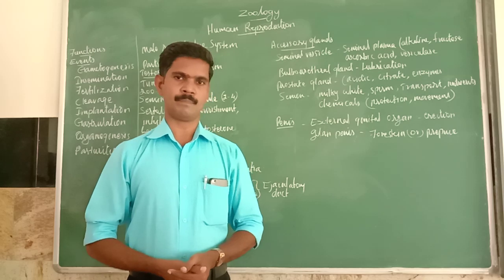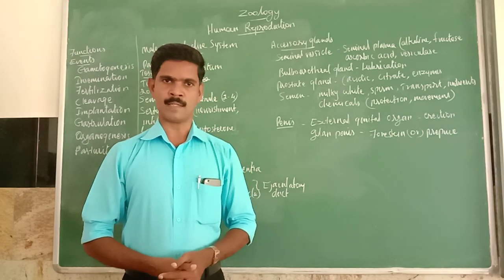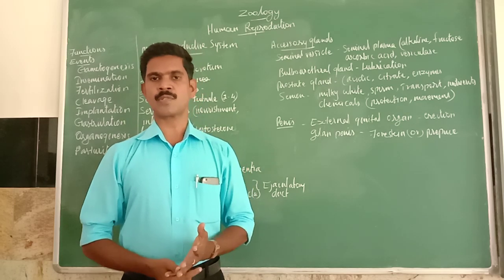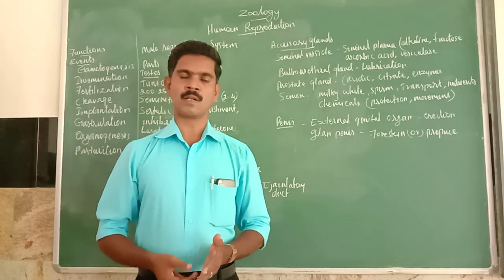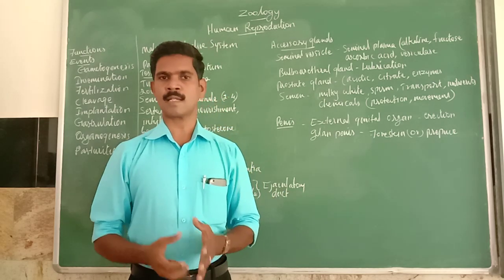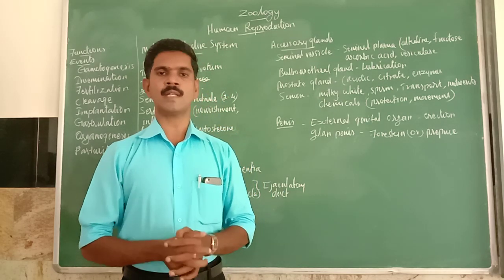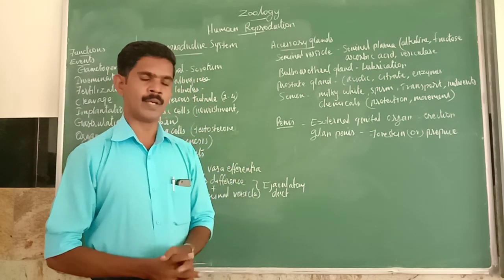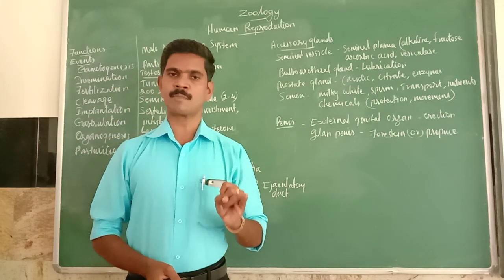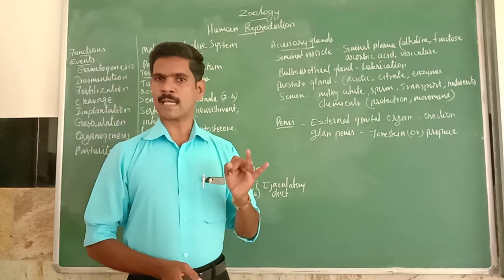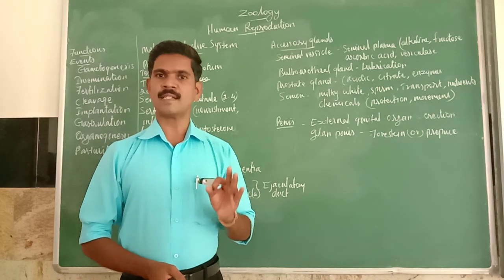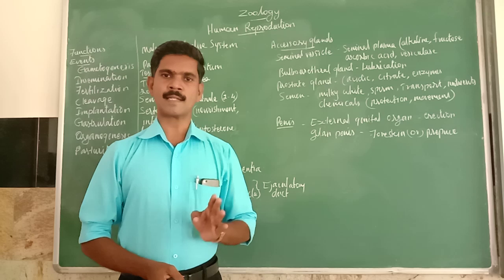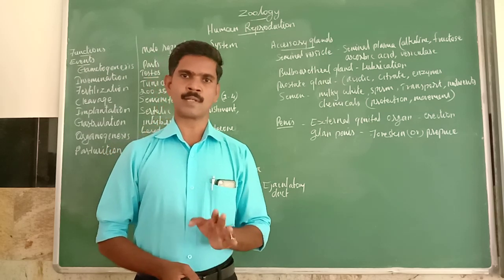The fourth function of the reproductive system is producing sex hormones — testosterone, progesterone, and estrogen. Different types of hormones are secreted in the reproductive system. To summarize: the four functions are production of gametes, transportation of gametes, nourishment to the developing embryo, and secretion of sex hormones.